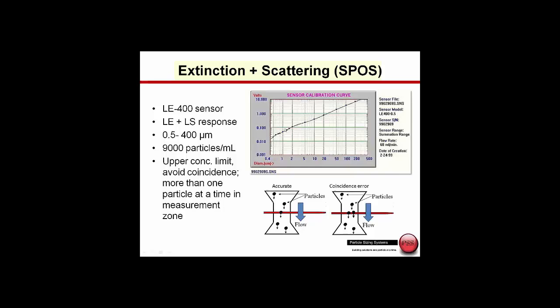This is the calibration curve for the combination light extinction and scattering sensor. This is for the LE400 sensor, which has a dynamic range of 0.5 to 400 microns. The upper concentration limit we can work at with this sensor is in the range of 9,000 particles per ml. The reason there is an upper concentration limit is we can only have one particle at a time passing through the measurement zone. Two particles passing through at the same time would be erroneously reported as one particle of a larger size.